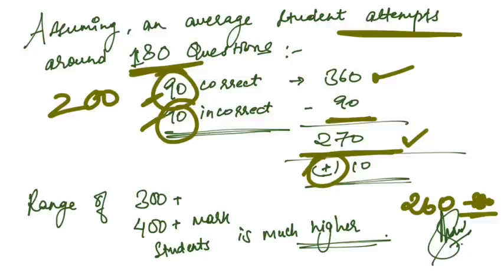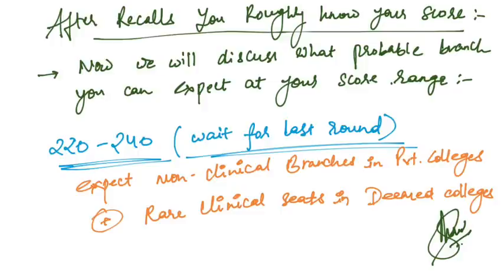The range of 300 plus and 400 plus marks students is very much high according to the survey and poll opinion I conducted. After recalls, you roughly know how much you are scoring, so now we will discuss what probable branch you can expect at your score range.